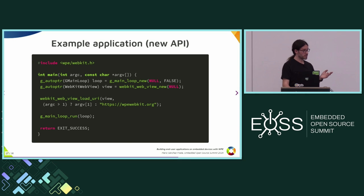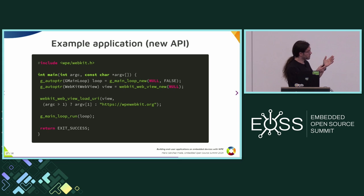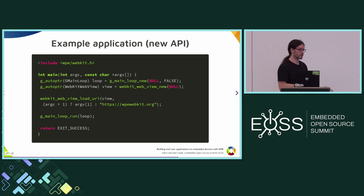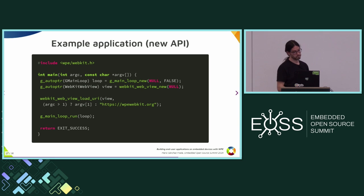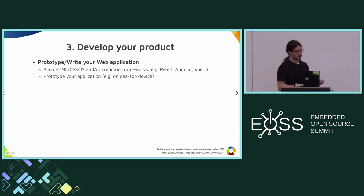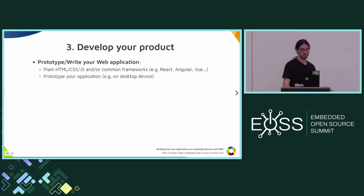Rolling your own application with the new API is very simple: it creates a main loop, creates a web view passing null — which in the new API means letting WPE select the right backend automatically — loads a URL, and runs the main loop. As simple as it gets. The nice thing about a web environment is you can prototype and write most of it on your desktop machine, then test on the target board.